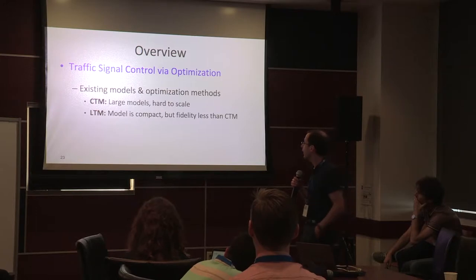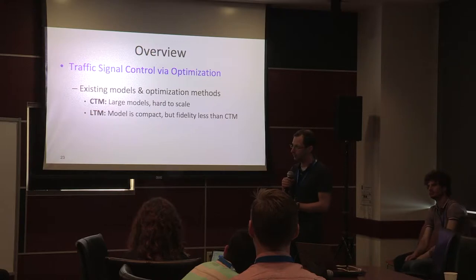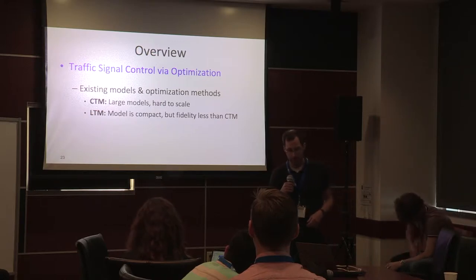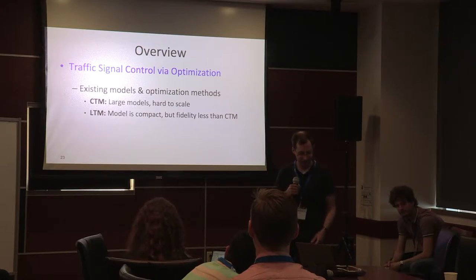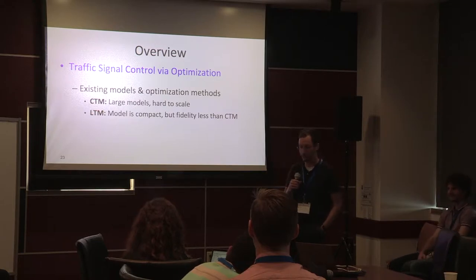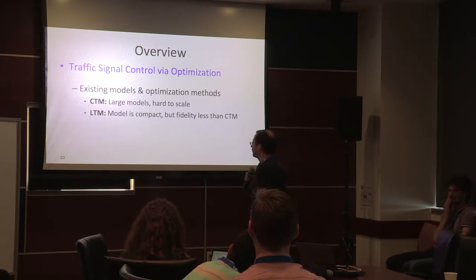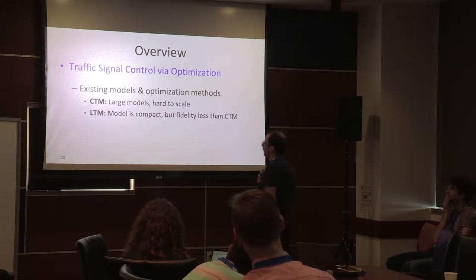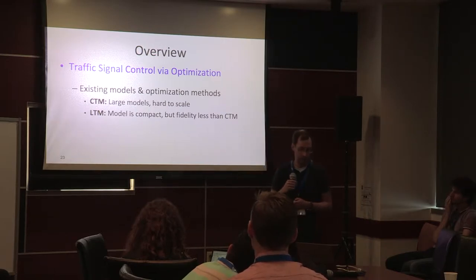This work builds on prior art going back to the 1970s with OPAC and Rhodes. Gartner at MIT was advocating for nonlinear optimization for traffic signals in the 1970s, and it took decades to get it working in practice — around 2000. Looking at more recent literature, there are two main models for modeling traffic flow: the Cellular Transmission Model (CTM) and the Link Transmission Model (LTM). CTM divides roads into segments of about 20 meters.